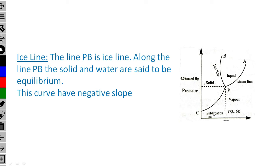Normally when slope is positive, if one axis value increases, the other axis value also increases. But this ice line curve has a negative slope, meaning as temperature increases, pressure decreases along this line.